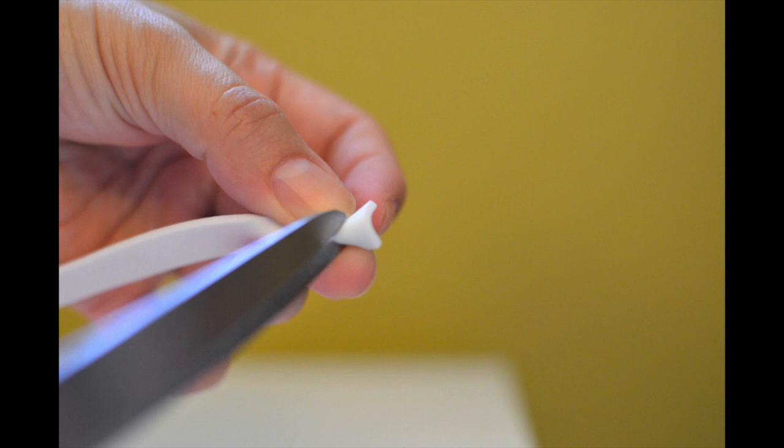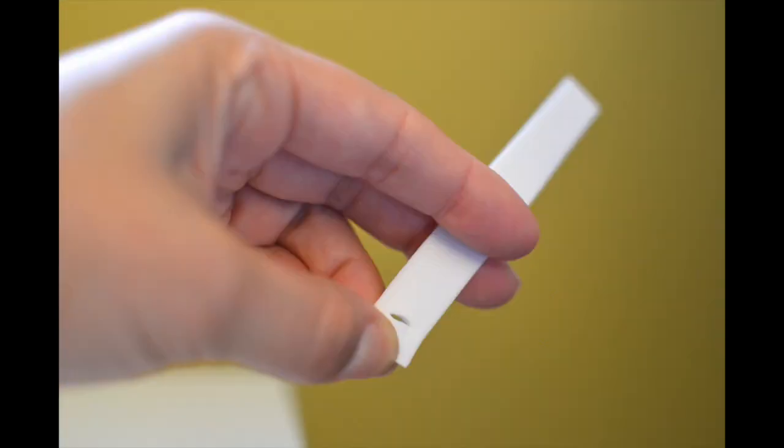Next you're going to cut tiny little slits into the headband about a quarter inch from each end.